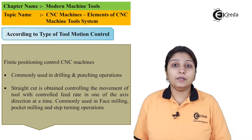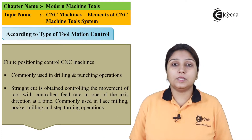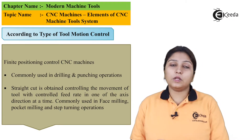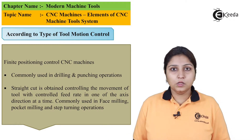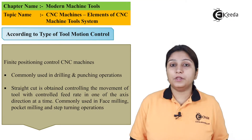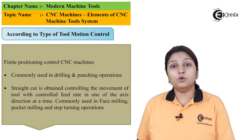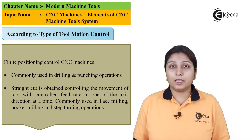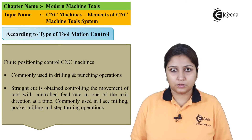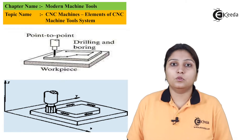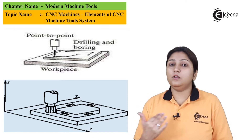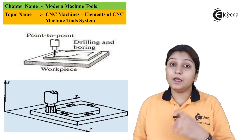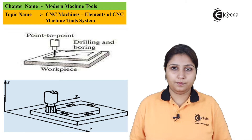The first type is point-to-point positioning or controlling your CNC machine. You need to fix the position — for example, if you need to make four holes, you fix the position of those holes, the machine tool programming is done, and the tool goes and performs the shaping or punching operation. Straight cuts can also be easily obtained using a point-to-point control system. As shown in this picture, you can do end control or specify certain points, and drilling or boring operations can be done at those points.